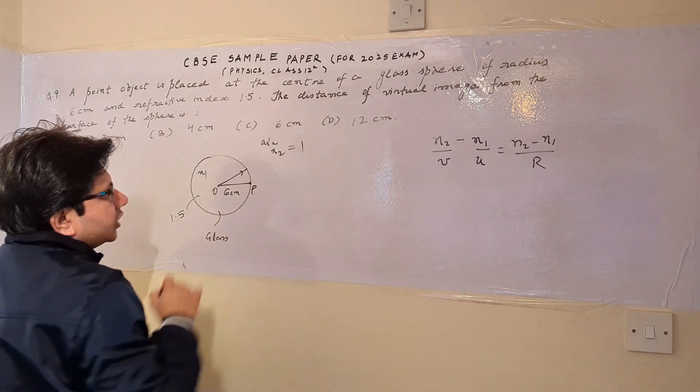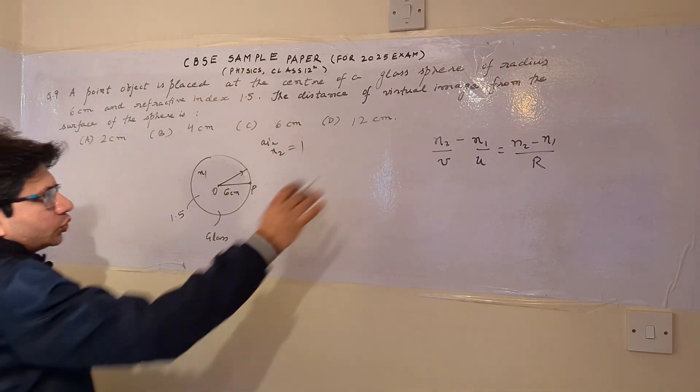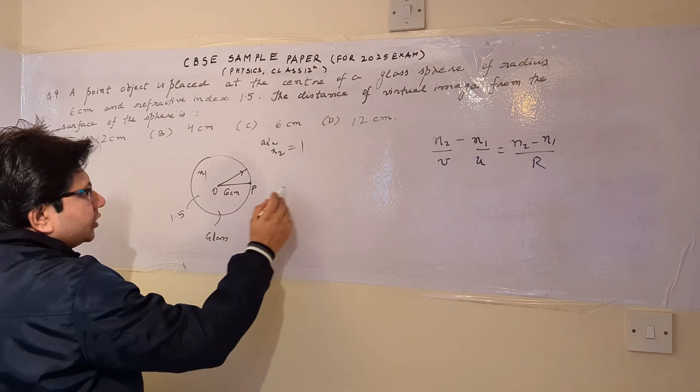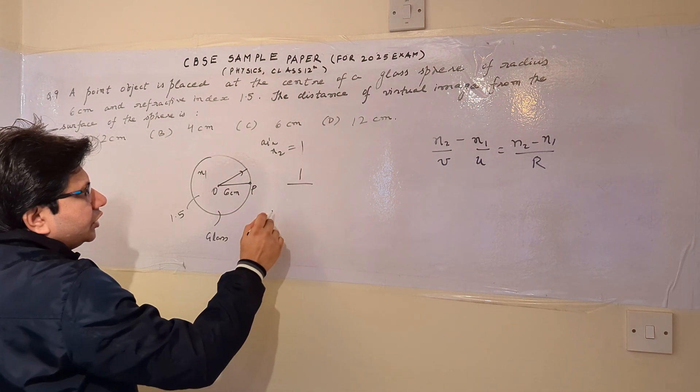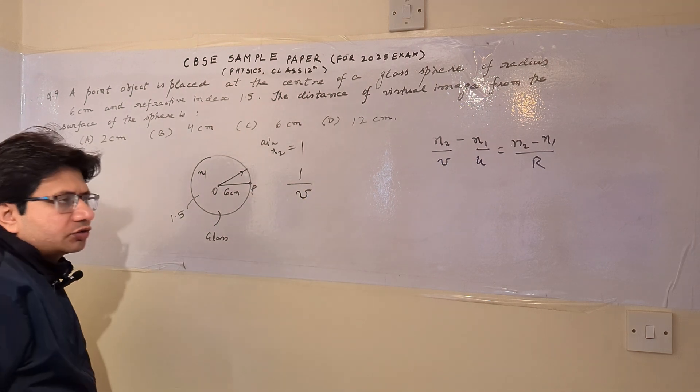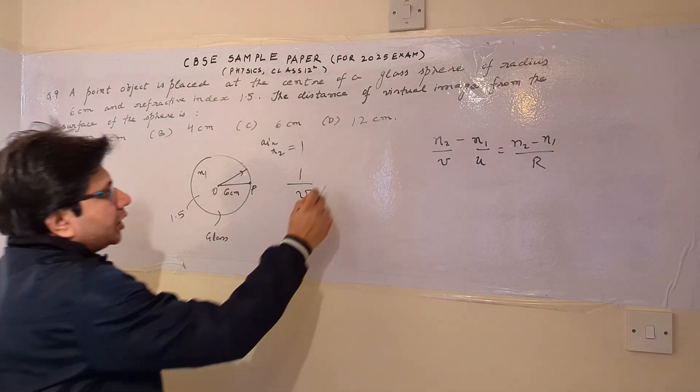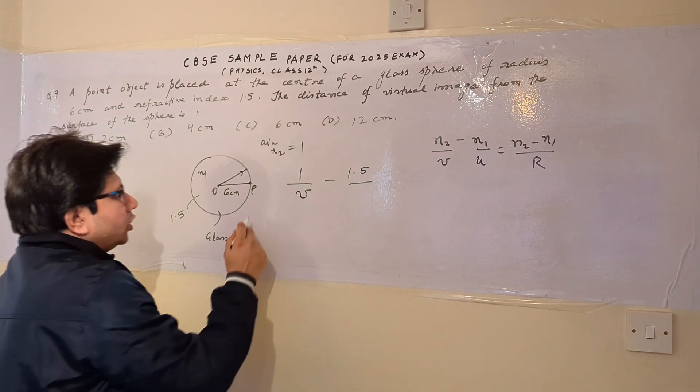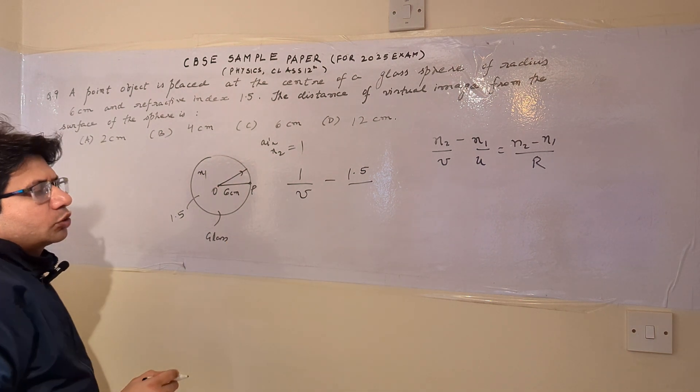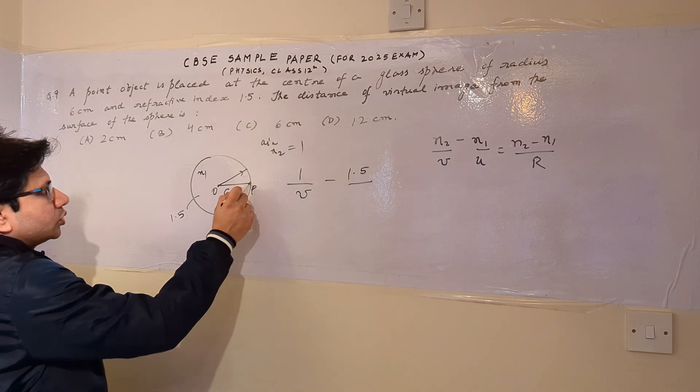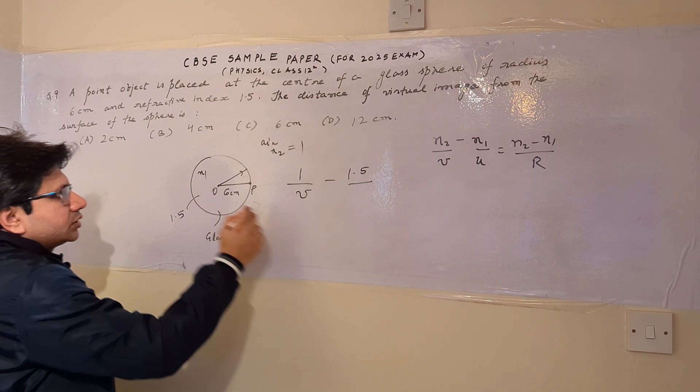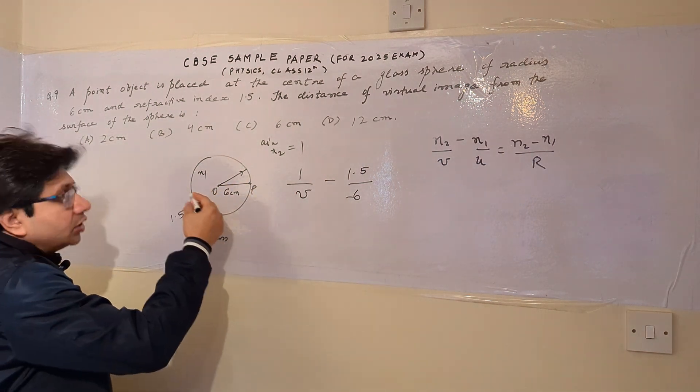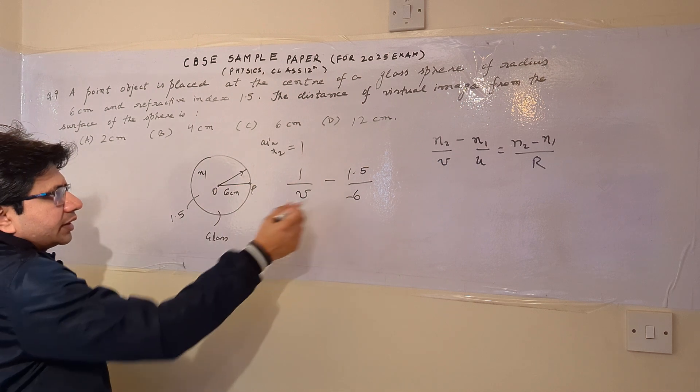So for air, we know that the refractive index is 1. So we use this formula here. N2 upon V, N2 is 1. And V is the position of the image, which we have to calculate, minus N1. N1 is 1.5 upon U. U is the distance of the object from the pole. So from the pole, the distance is 6, but in the left-hand side. So according to the sign convention, it is negative 6.